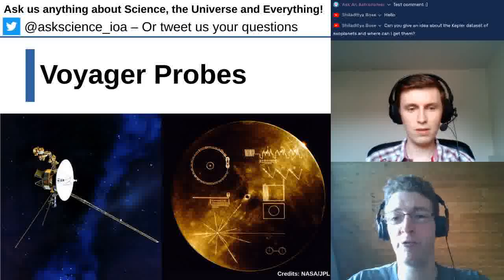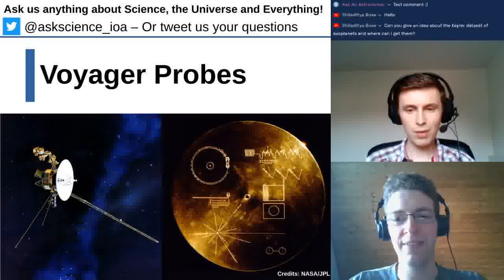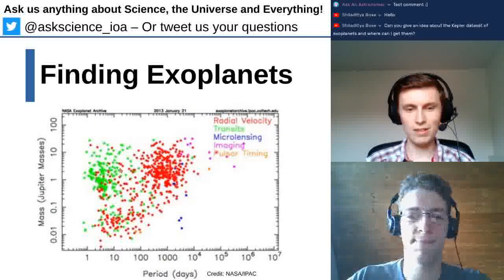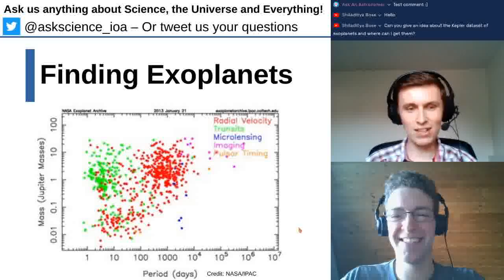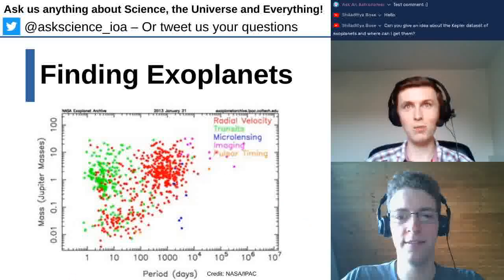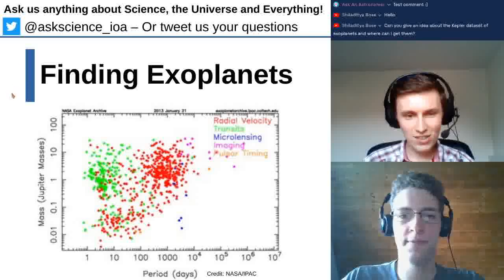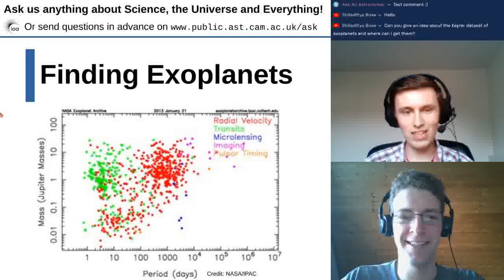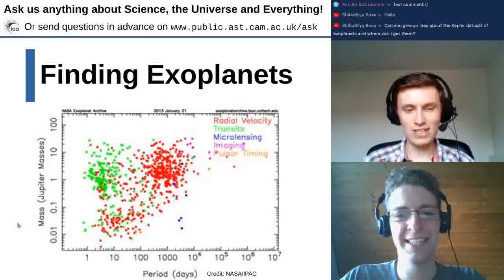By measuring how a star's spectral lines shift, you can deduce whether a planet exists and estimate its mass and orbital distance. Combining this with Kepler data lets you learn quite a lot about an exoplanet system. On the detection plot, transits are shown in green and radial velocity in red — those two methods absolutely dominate the field.